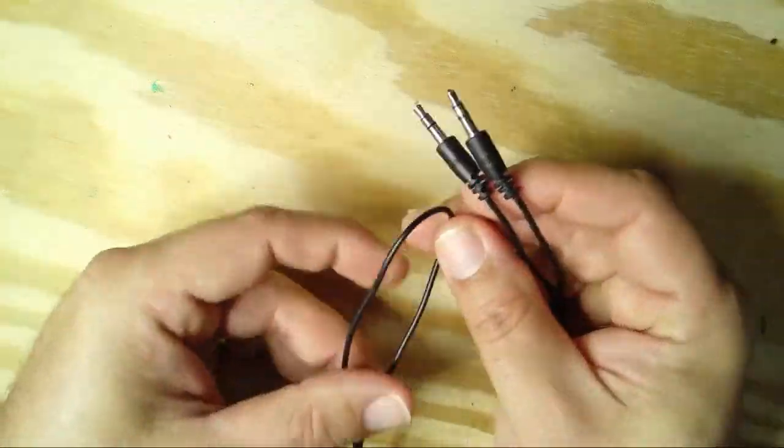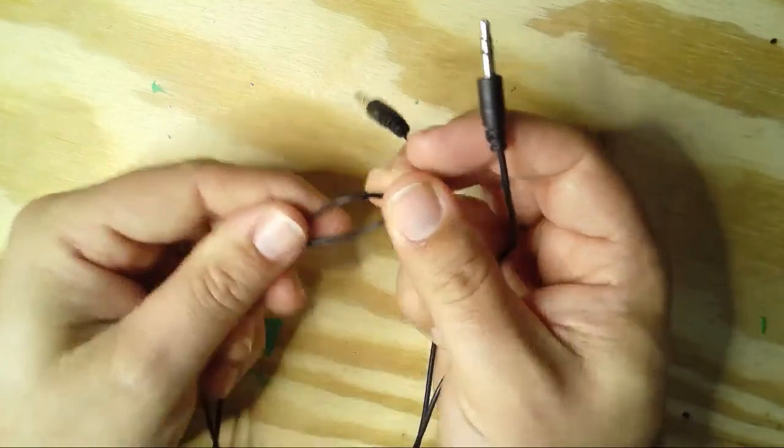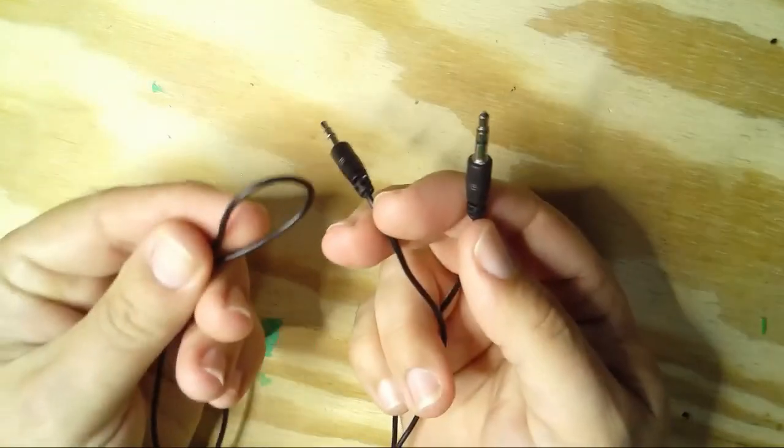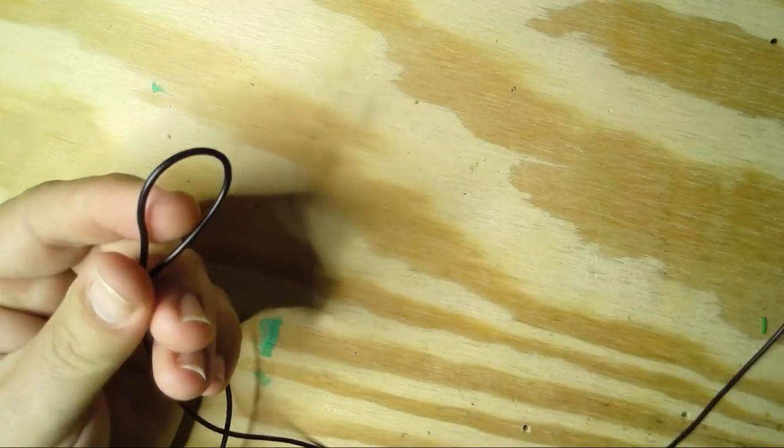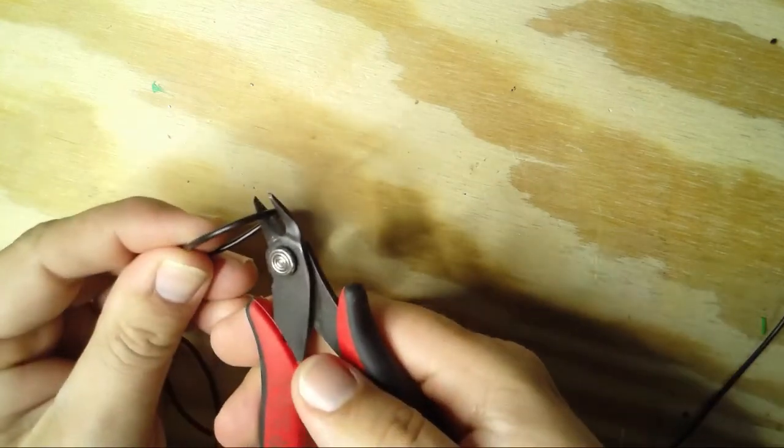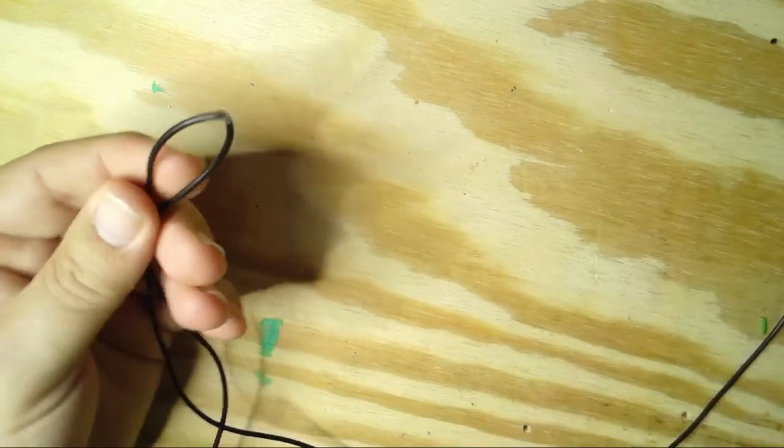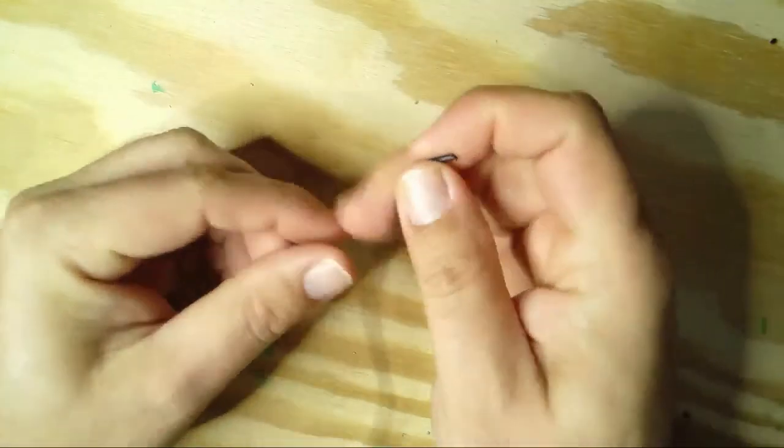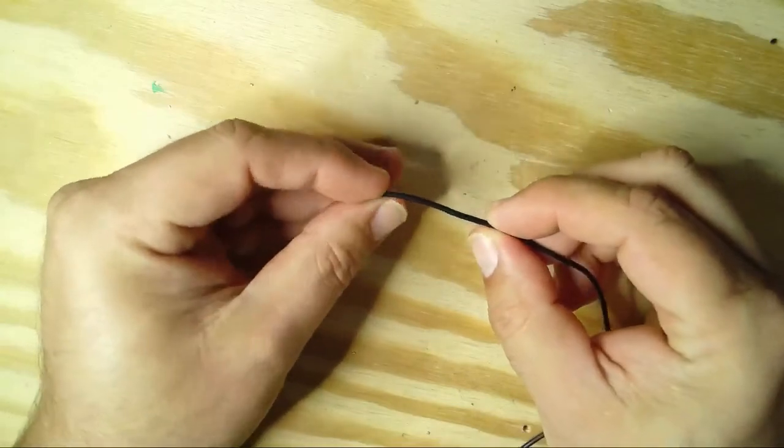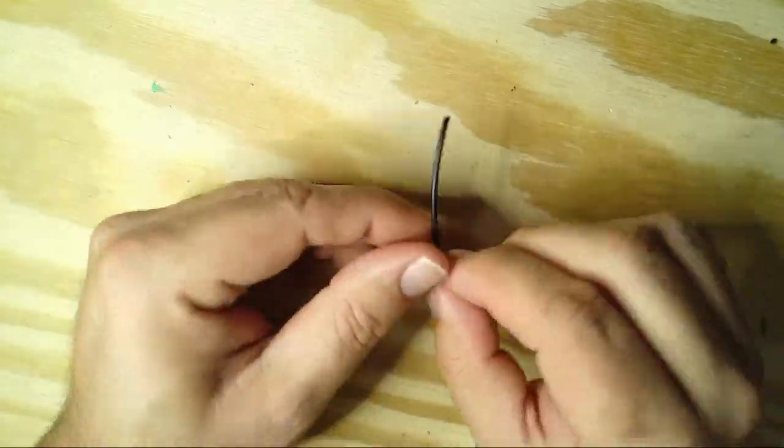Our first step here is to take our aux cord and cut it in half. We're going to cut it in half so that we get two cords that we can use for two separate switches. We're going to take any cutters you have handy. These are usually very thin wires. Cut them and we're going to set one of these aside. On the other one we're going to need to open this up and there should be three separate conductors in here that we're going to work with.